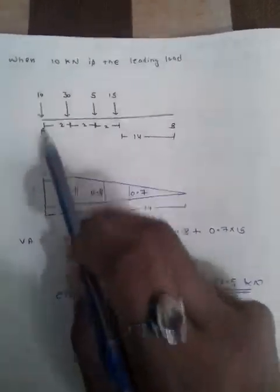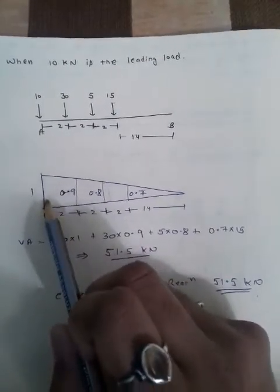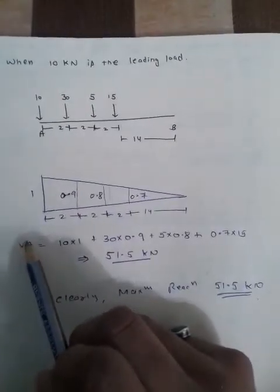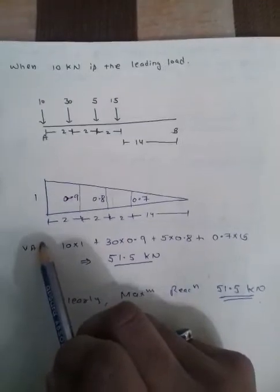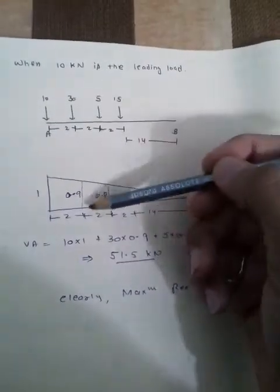Va is calculated as load multiplied by ILD displacement. So Va = 10×1 + 30×0.9 + 5×0.8 + 15×0.7. This gives Va = 51.5 kN when the 10 kN load is the leading load.